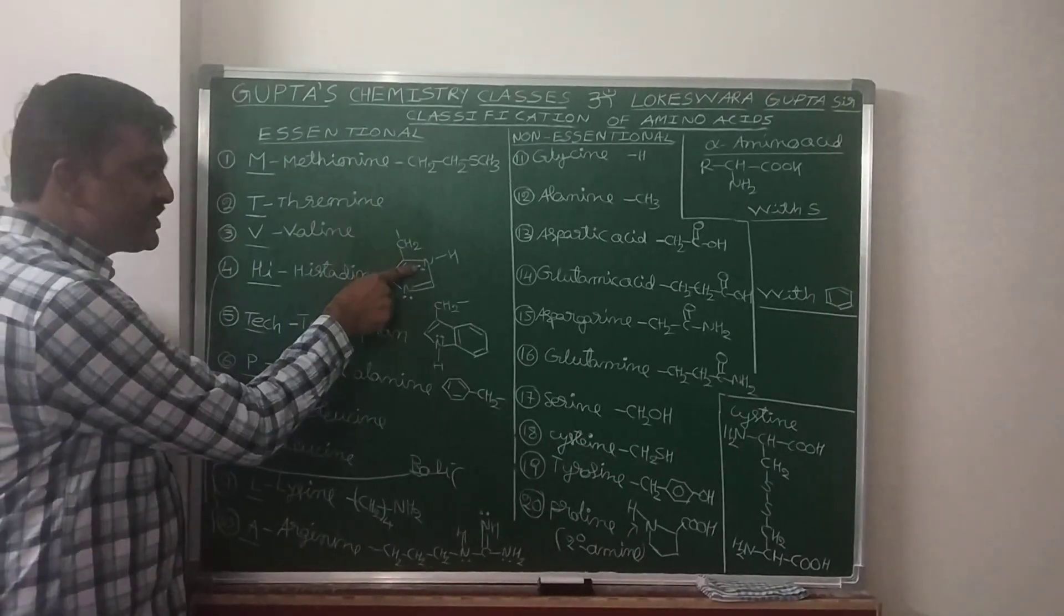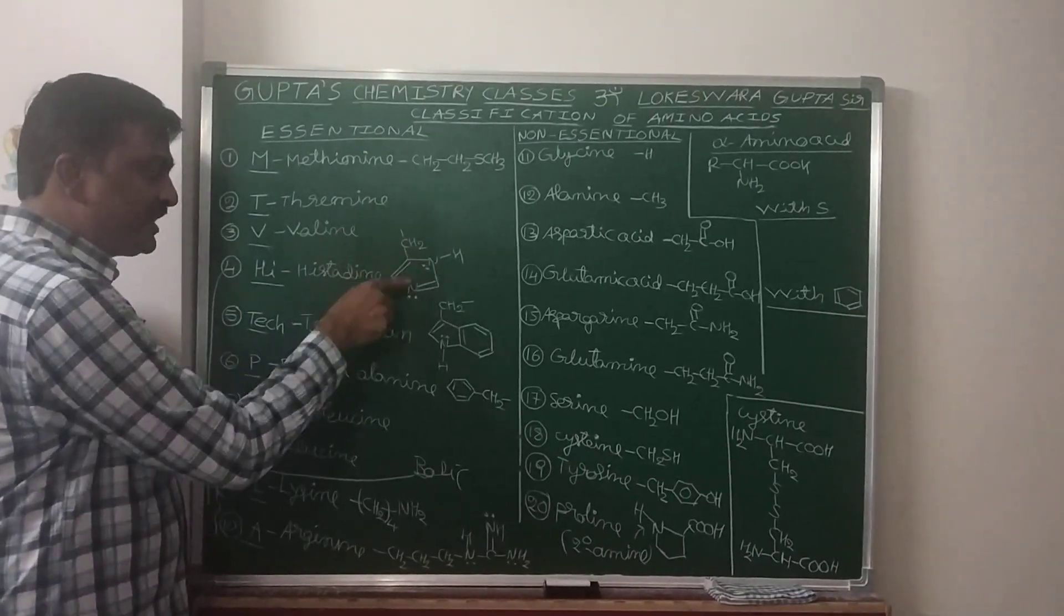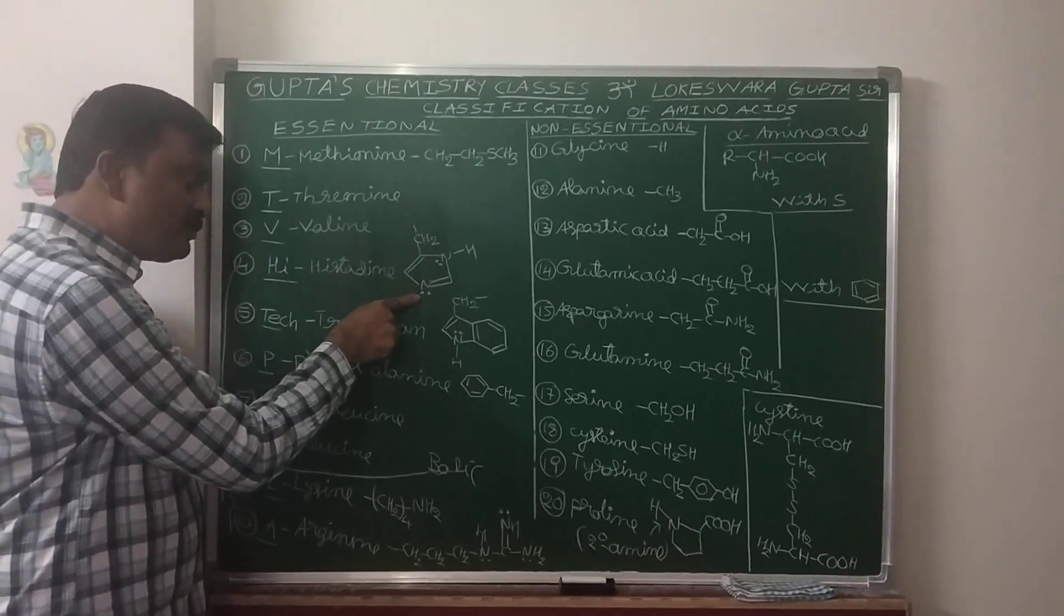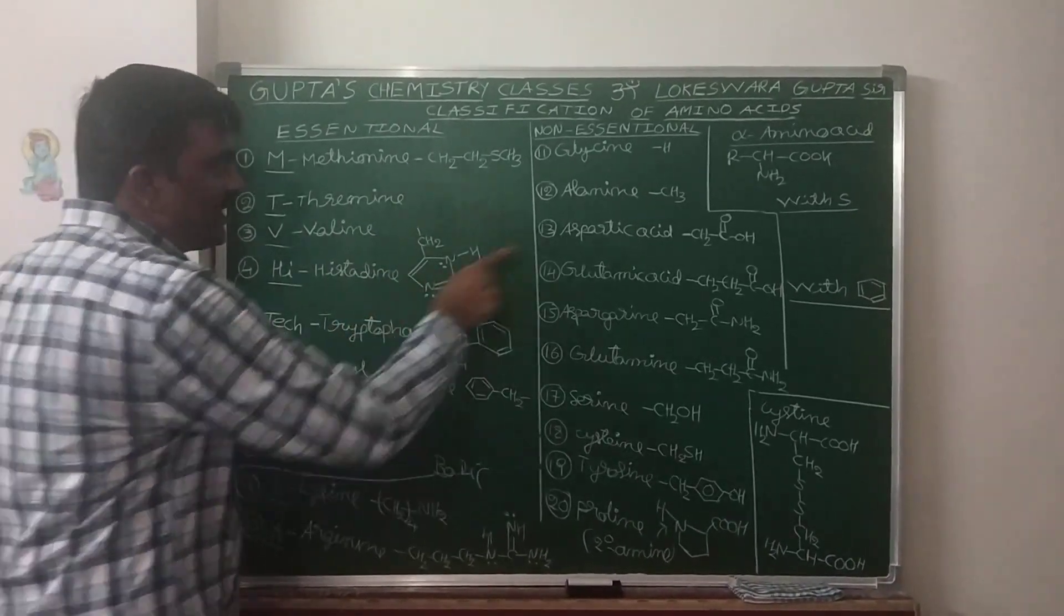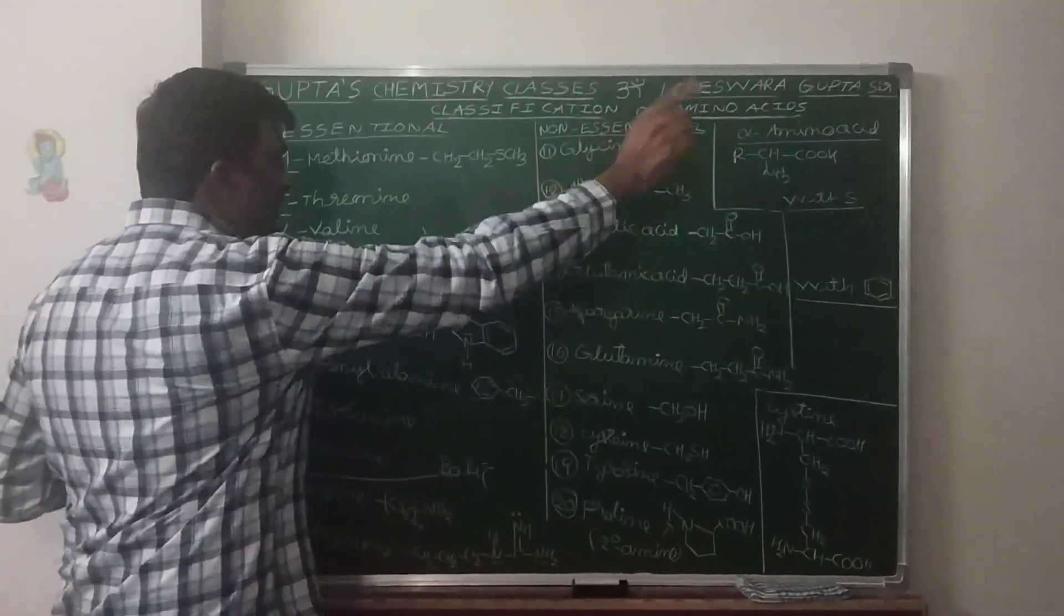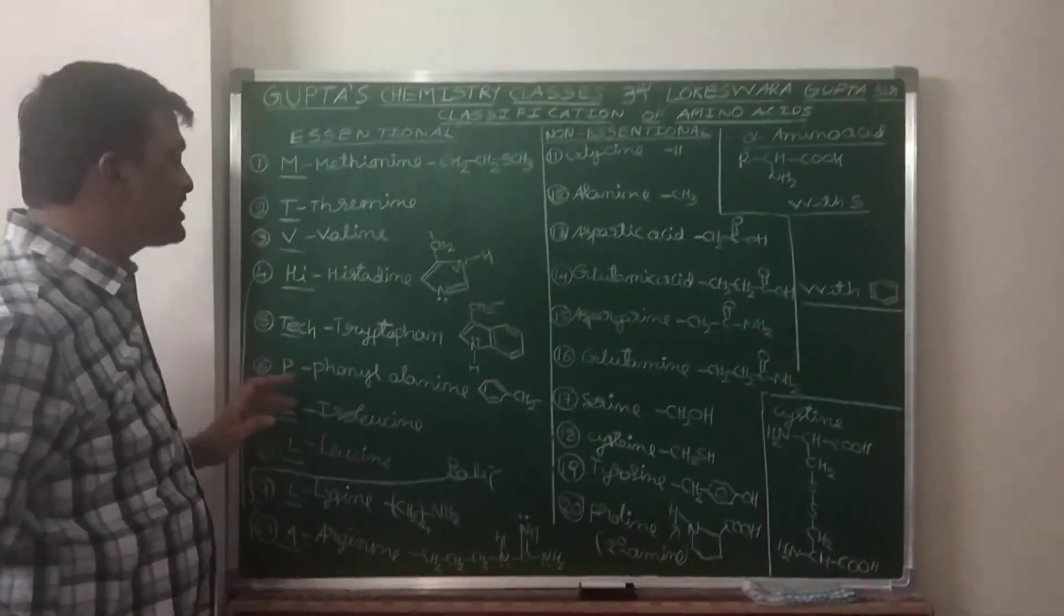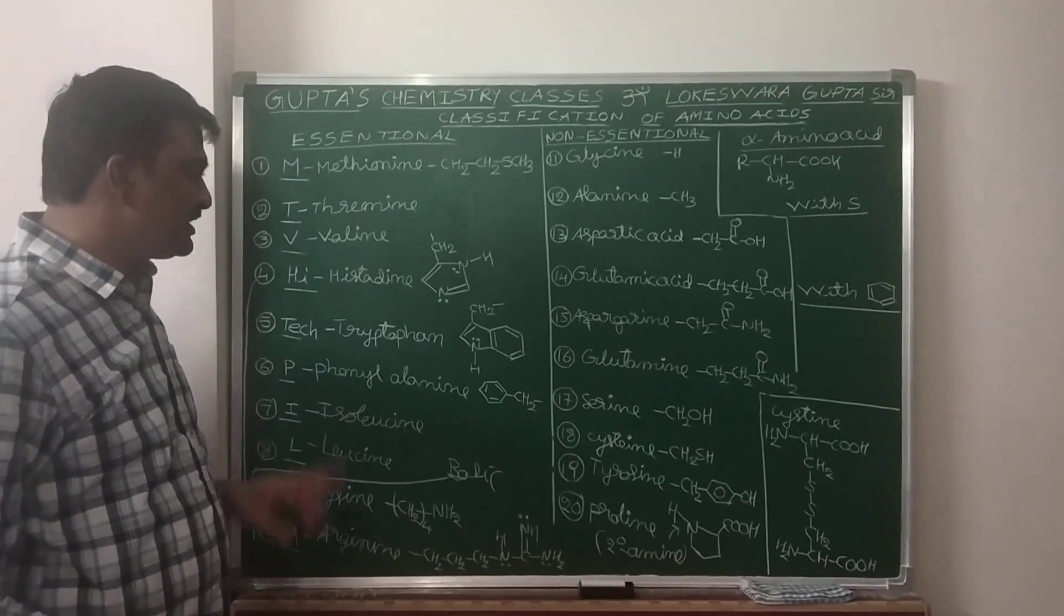See, in the Histidine, this lone pair is delocalized, this lone pair is localized. This one is more basic because of this one. Two basic, one acidic groups. That's why Histidine is basic.